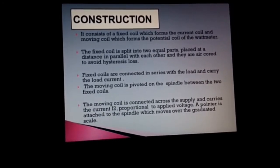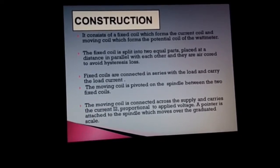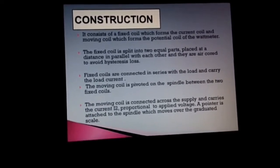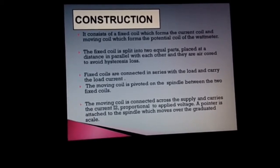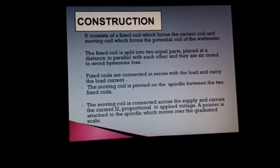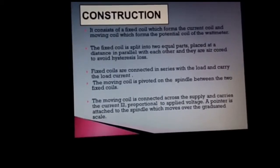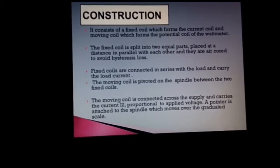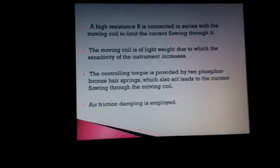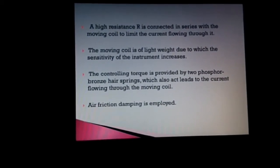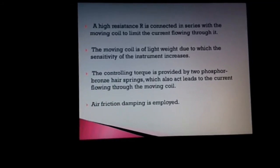The moving coil is pivoted on the spindle between the two fixed coils. The moving coil is connected across the supply and carries the current I2, proportional to the applied voltage. A pointer is attached to the spindle which moves over the graduated scale. A high resistance R is connected in series with the moving coil to limit the current flowing through it.